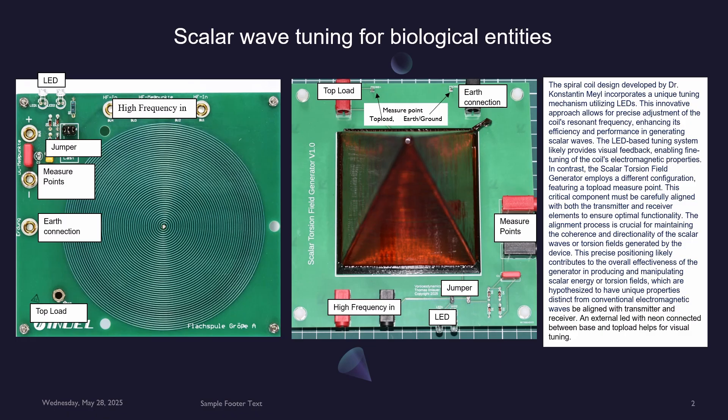In contrast, the scalar torsion field generator employs a different configuration featuring a top load measure point. This critical component must be carefully aligned with both the transmitter and receiver elements to ensure optimal functionality. The alignment process is crucial for maintaining the coherence and directionality of the scalar waves or torsion fields generated by the device.